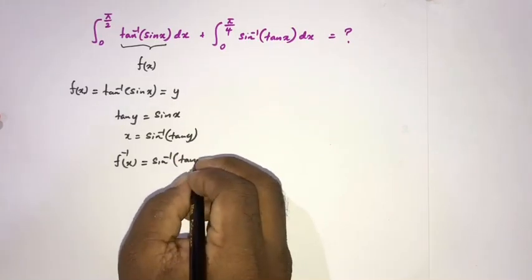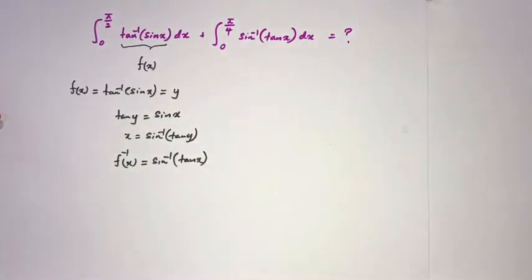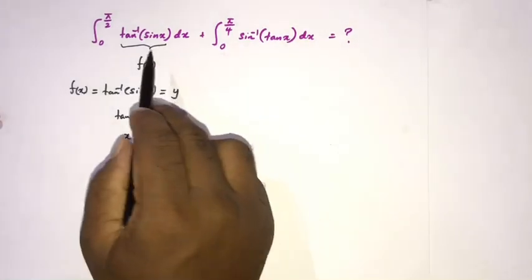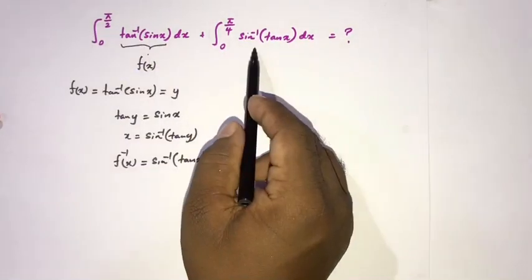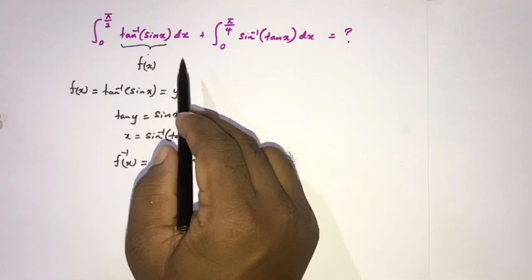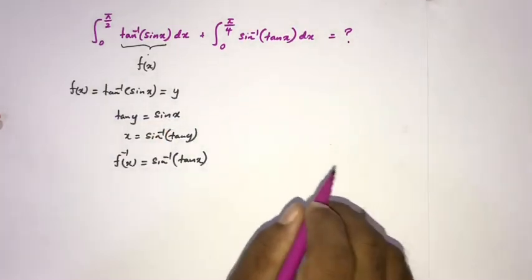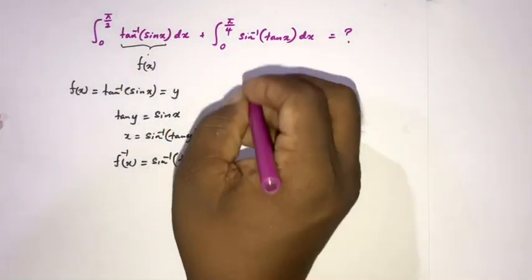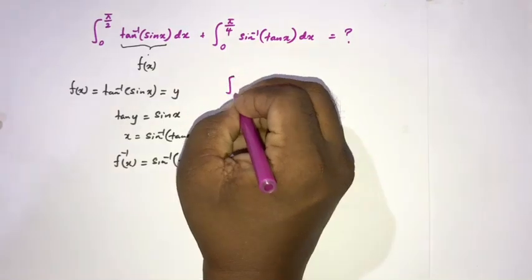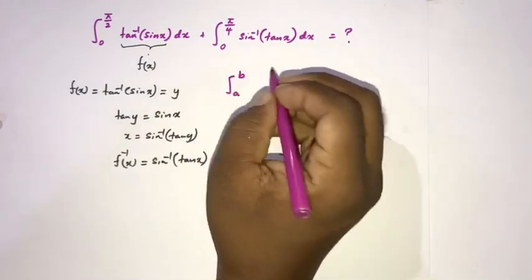Instead of y here, x. Now here we have f(x) and here we have inverse of f(x). So we know about license for integral formula.